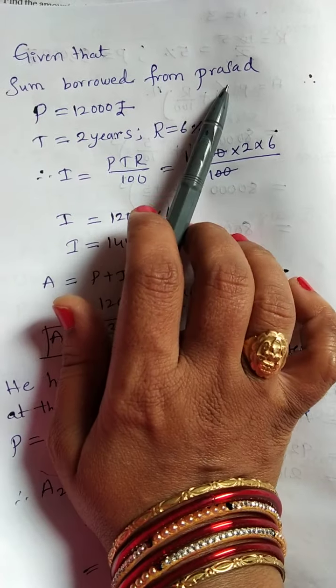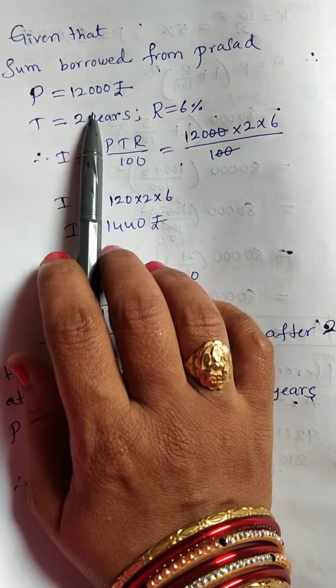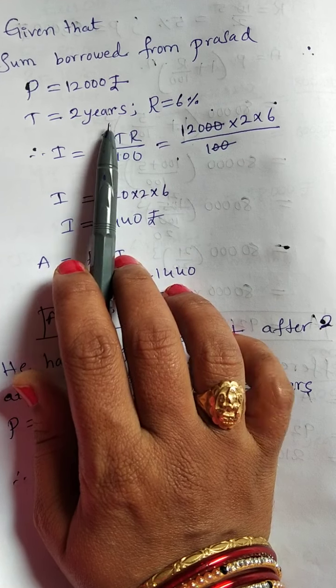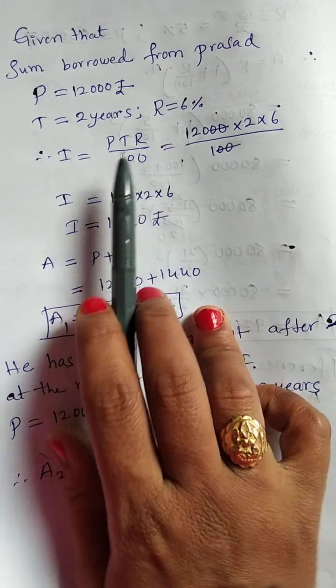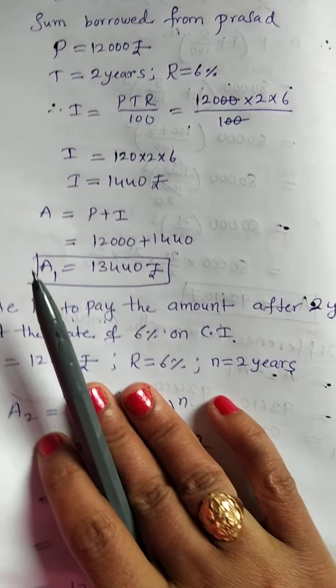Given sum borrowed from Prasad, 12,000 rupees, 2 years time, rate of interest is 6%. Now, find the simple interest.